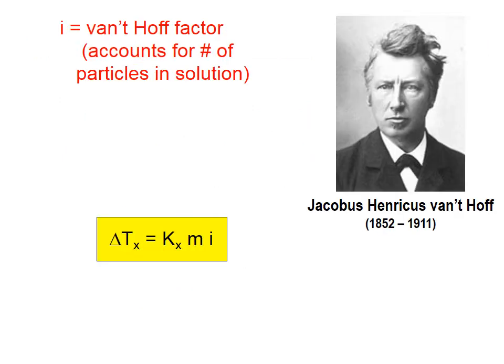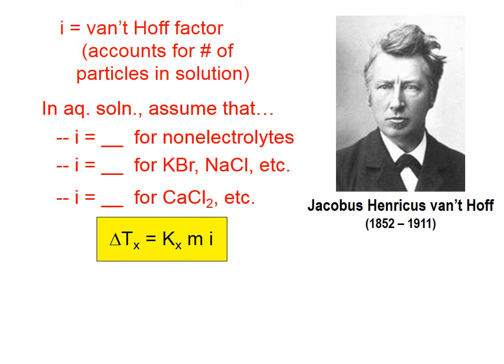The Van't Hoff factor i accounts for the number of particles in a solution. In aqueous solution, for this introductory treatment, we assume i = 1 for non-electrolytes — each non-electrolytic particle remains as a unified whole and does not break into pieces. For potassium bromide and sodium chloride, when put into aqueous solution they break into two particles — a K⁺ and a Br⁻, or an Na⁺ and a Cl⁻ — so the Van't Hoff factor is 2. For calcium chloride, it breaks into three ions: a Ca²⁺ ion and two Cl⁻ ions, so i = 3.